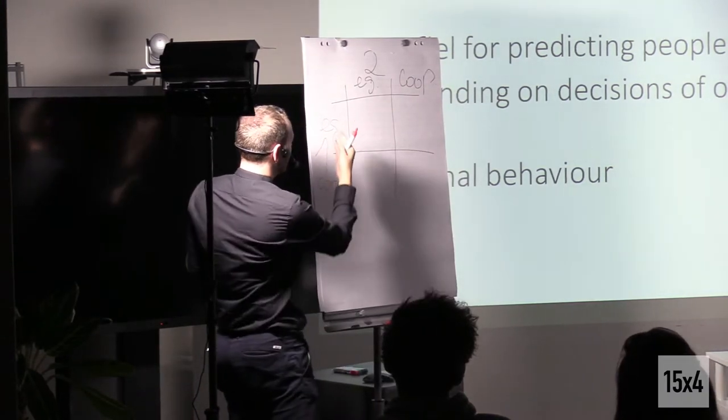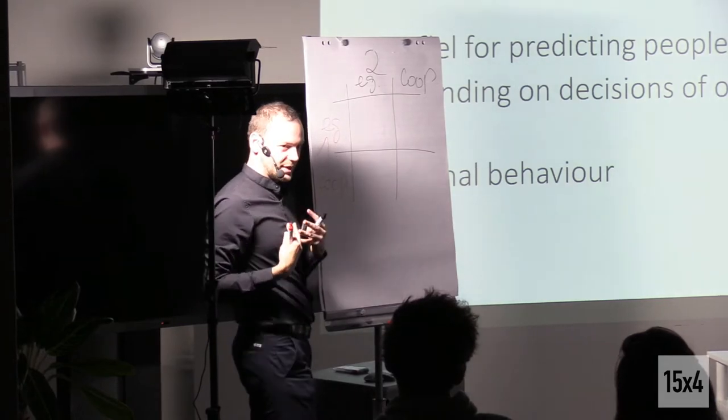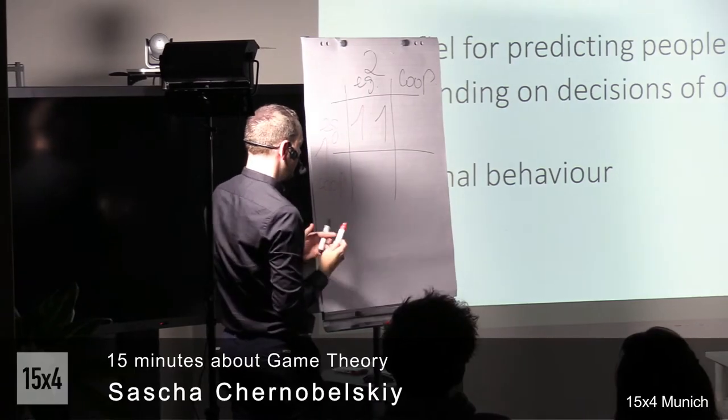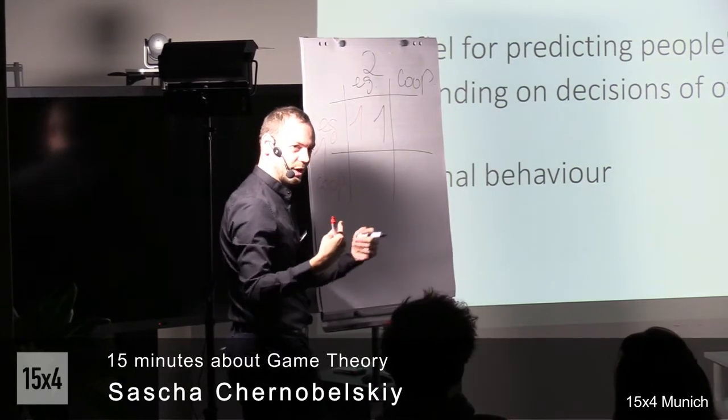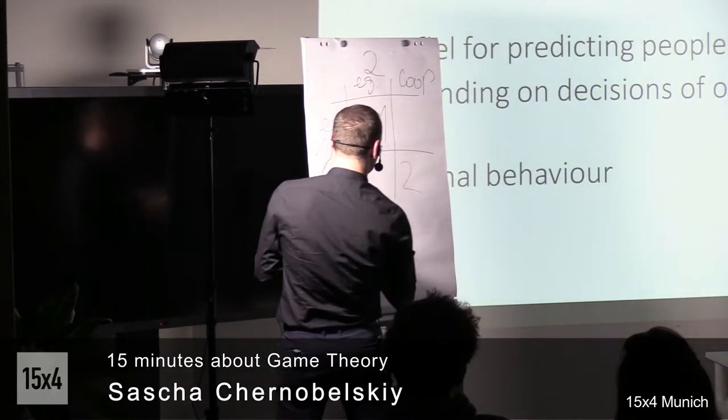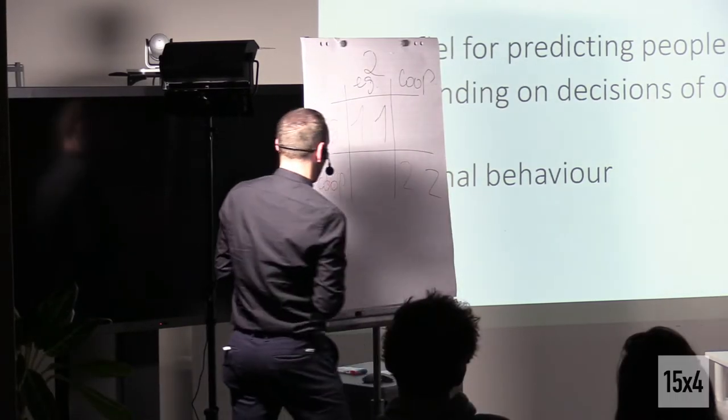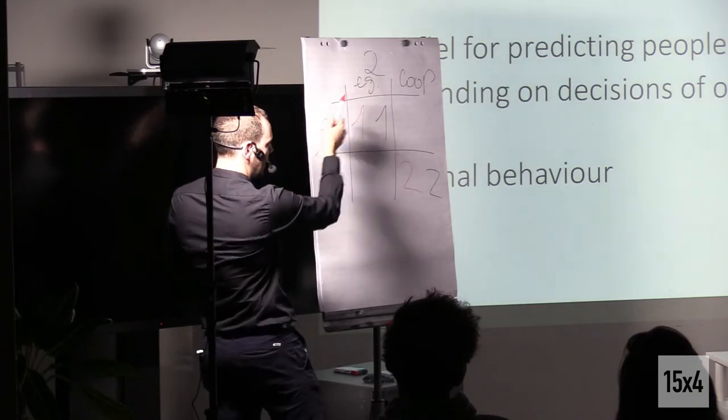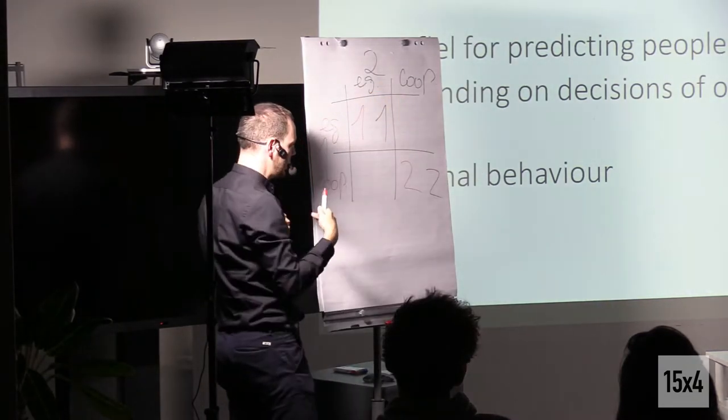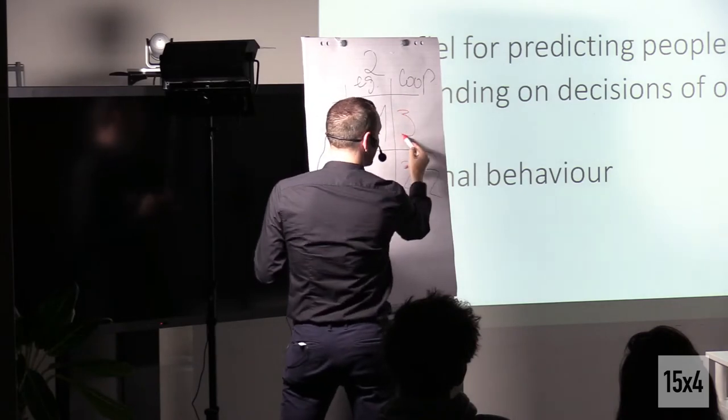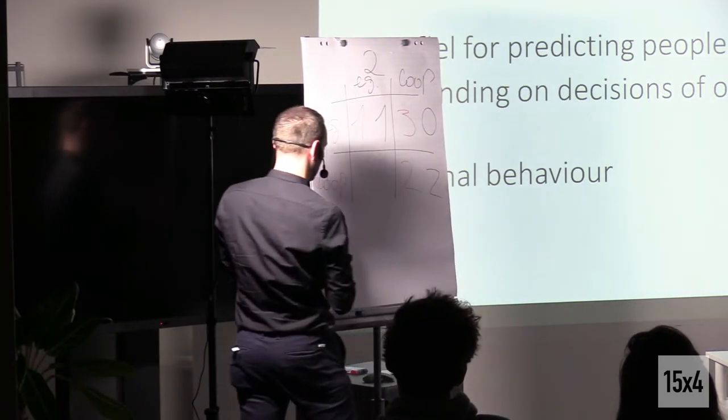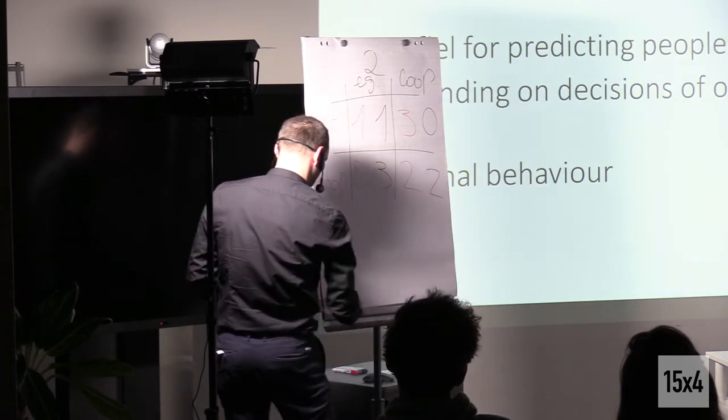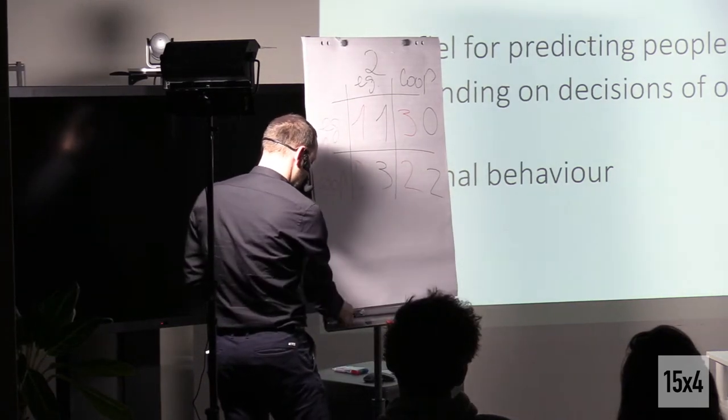So now we need the outputs. What will happen? So if both play egoistically, if both decide to keep the money, they will get one euro each. If both decide to give the money to the other institute, they will get two euros each. And if player number one, for example, decides to keep the money, so he will play egoistical strategy, and the other guy decides to give his money, so player number one will get three and the other nothing. And the same here the other way around.